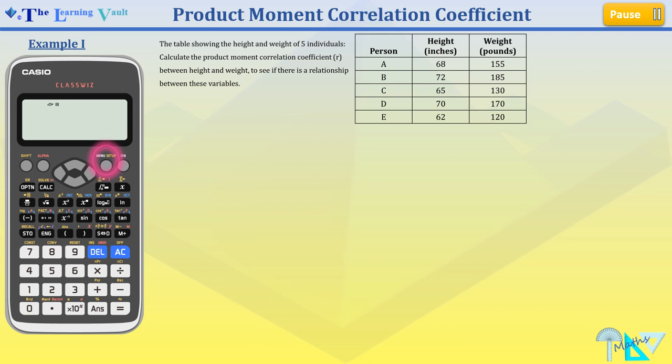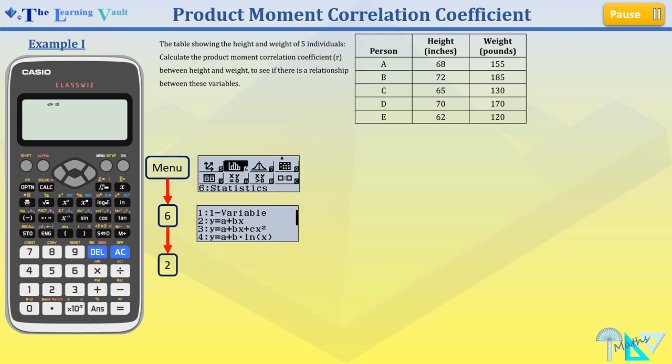First we press the menu button. Next we press the number 6 button, and next we press number 2. This leads us to our table. Now we're going to enter our values, our x values first.